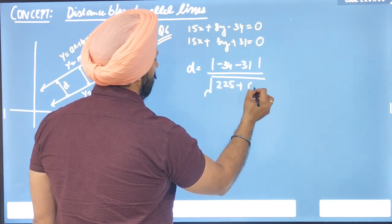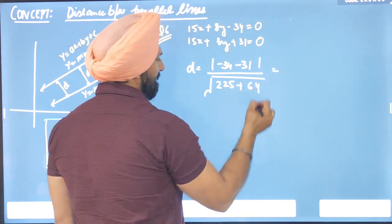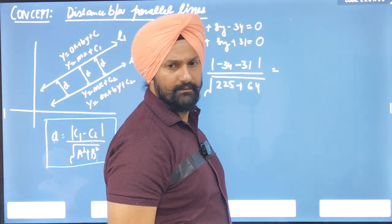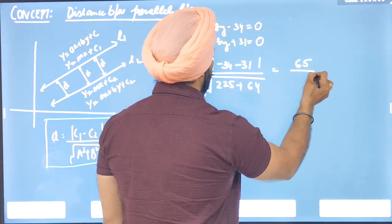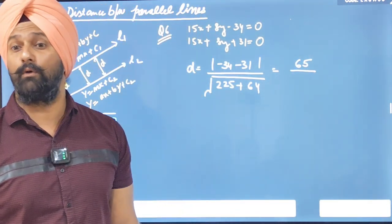Minus 34 minus 31 is minus 65, becomes plus 65. 225 plus 64 equals 289.